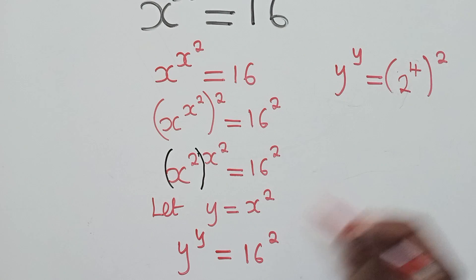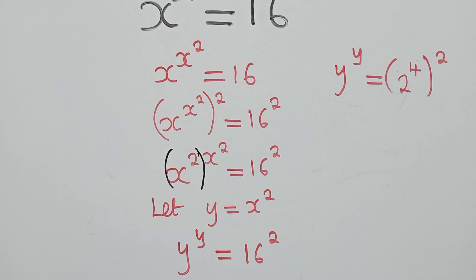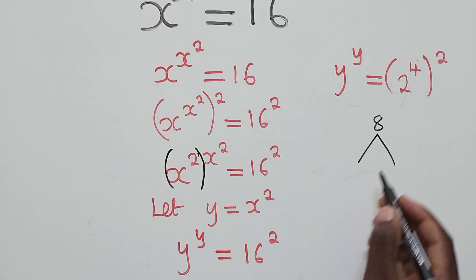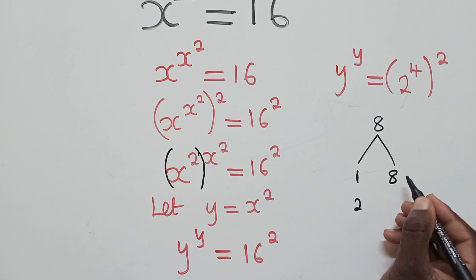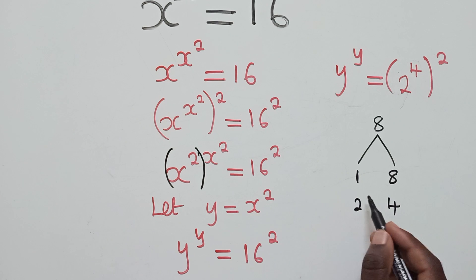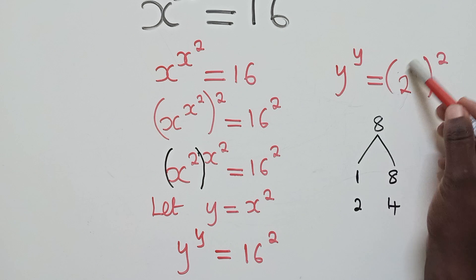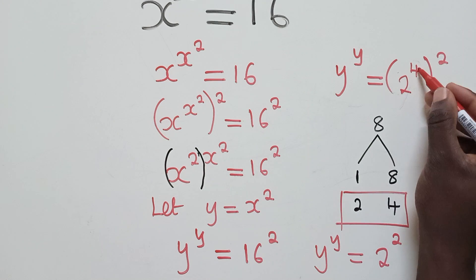So 2 power 4 is 16, power 2 there. After doing that, using the laws of indices we multiply the powers: 4 times 2 is 8. Now we find the factor pairs of 8: 1×8 gives 8, and 2×4 gives 8. Out of these factors we pick which ones to place in the base and power positions such that what is inside equals the power. The set that works is this one here, so we say y^y = 2 power 2, with 2 on the power.